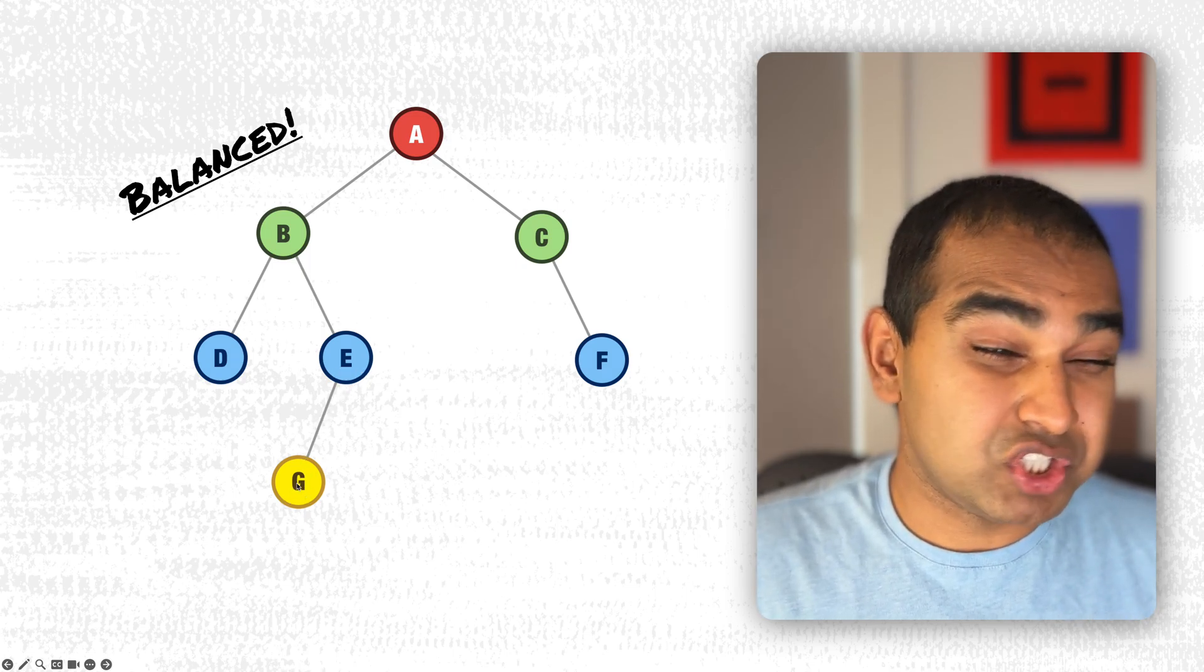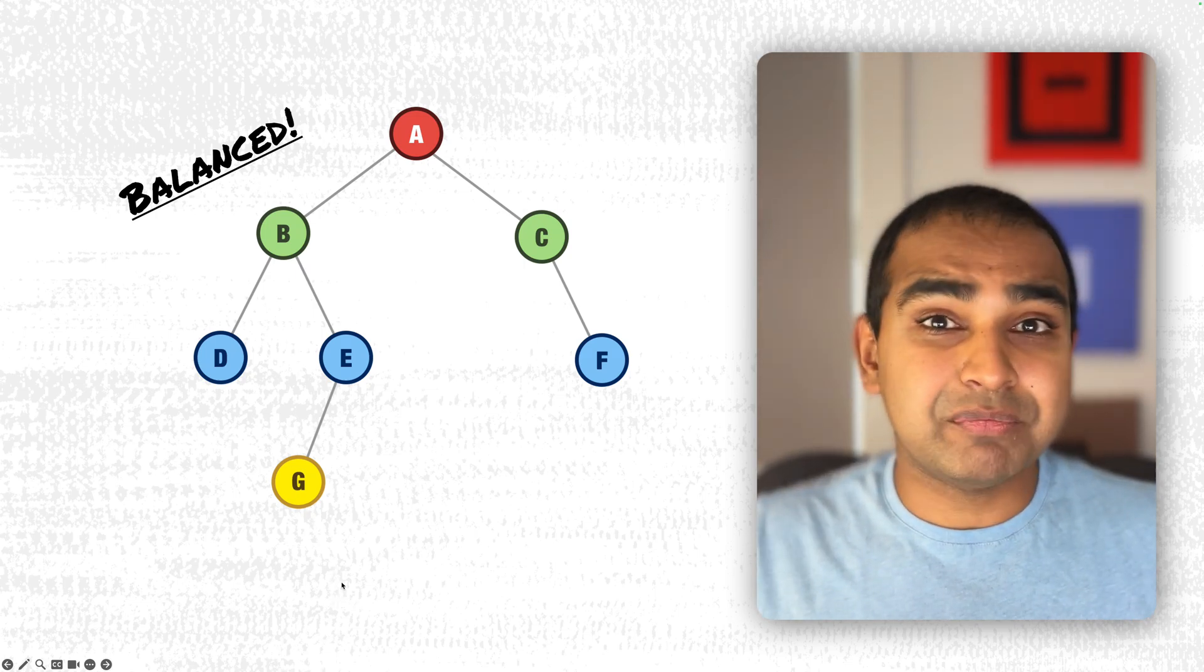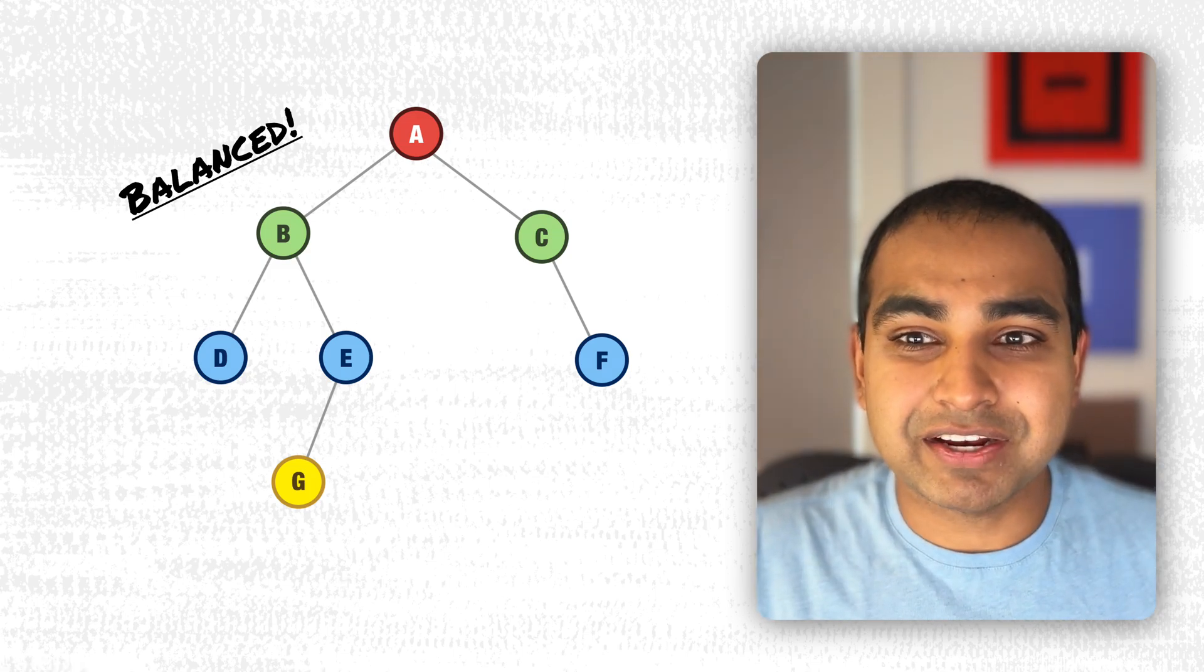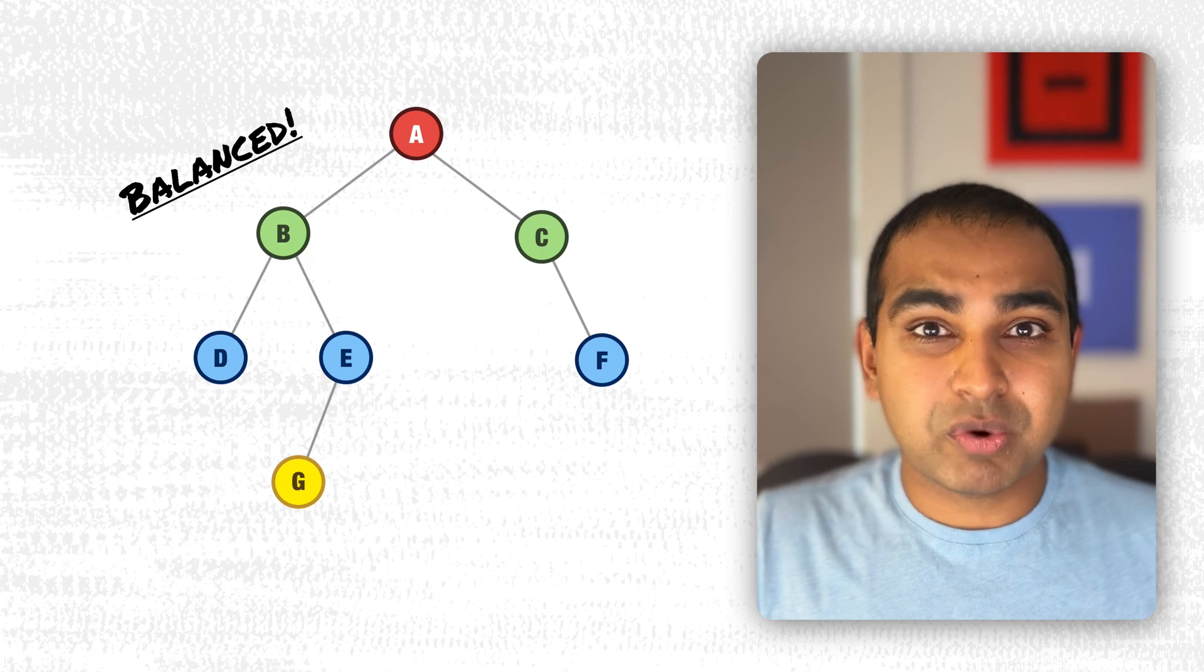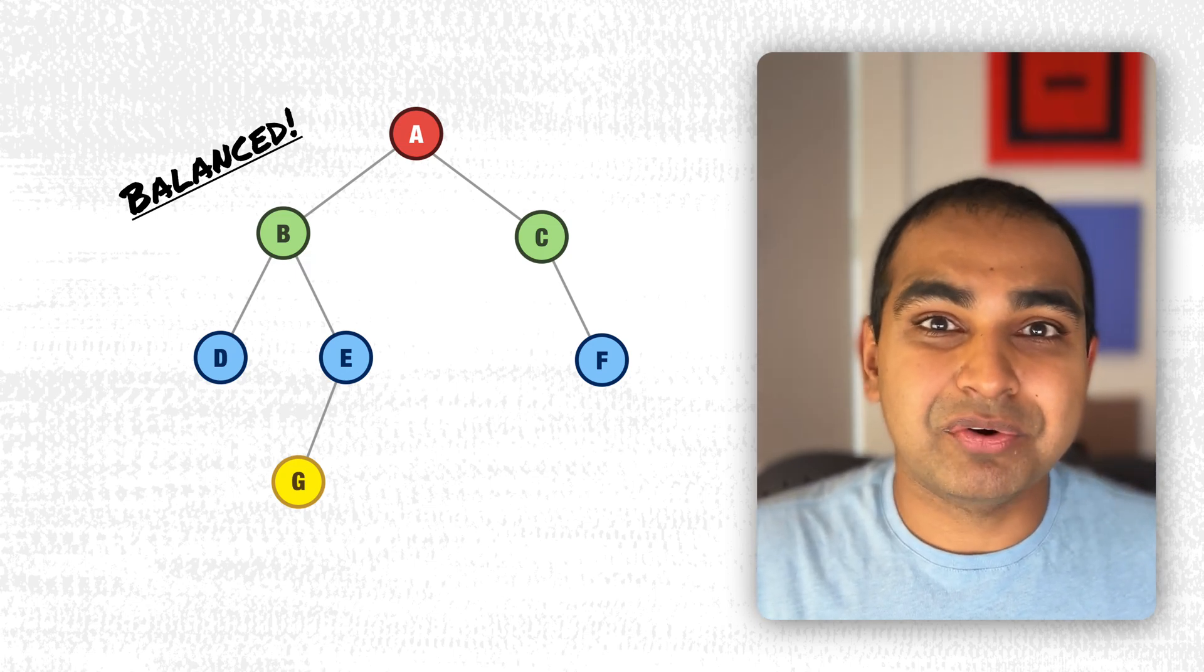Imagine if G had a child and went below, they'd no longer be balanced. The idea is that, and we will look at this much later, when you're navigating through your binary tree to find items, you're not ever going to be in a situation where one part of the tree is so long and so deep you're spending a lot of time going through some items there...